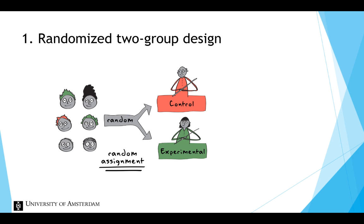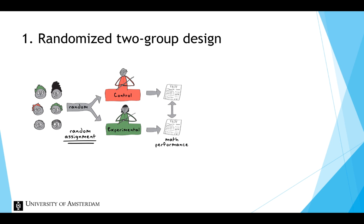The dependent variable is measured after exposure to the independent variable to assess the difference between the groups. With this design, we can rule out alternative explanations or threats to internal validity. We know that differences are not a result of maturation, because the two groups should have matured at the same rate if they were tested at the same time.